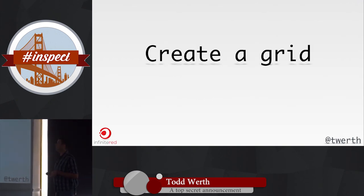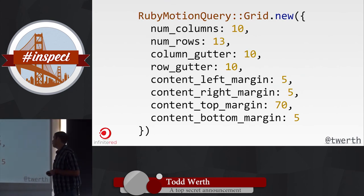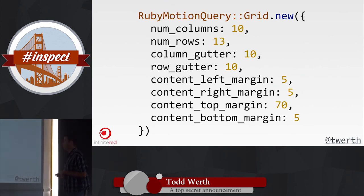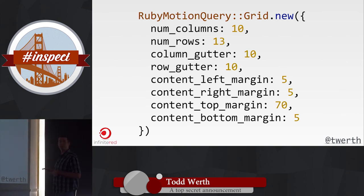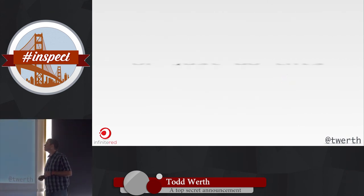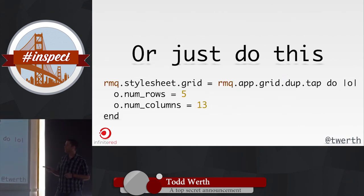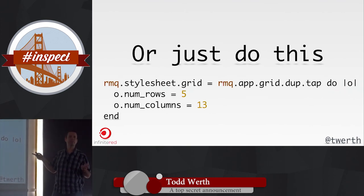To create a grid: 'Grid.new' with all the params — straightforward. What's cool is you can change one of these, reapply all the styles, and everything will adjust. I typically dupe the app grid and change the settings because most settings are the same.